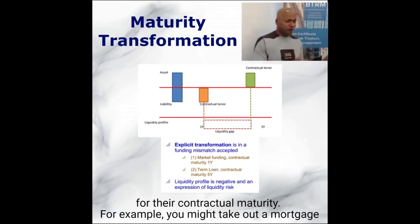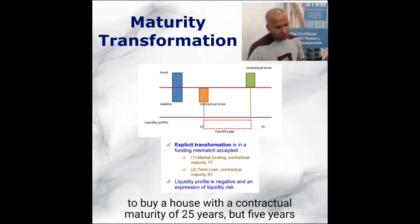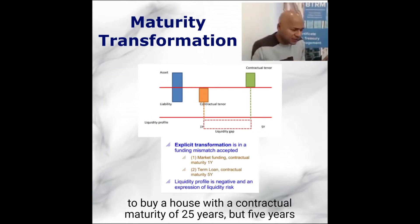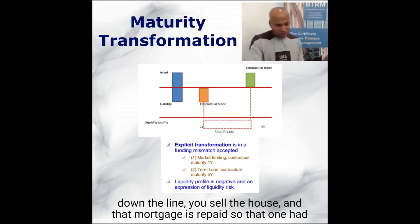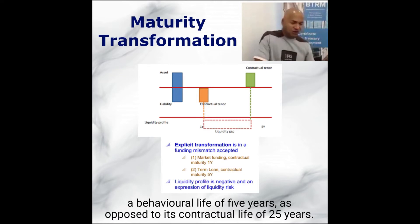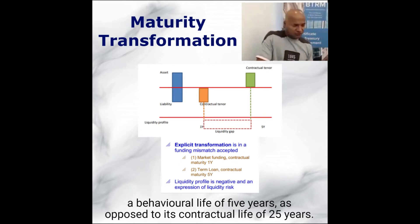For example, you might take out a mortgage to buy a house with a contractual maturity of 25 years, but five years down the line, you sell the house and that mortgage repays. So that one had a behavioral life of five years, as opposed to its contractual life of 25 years.